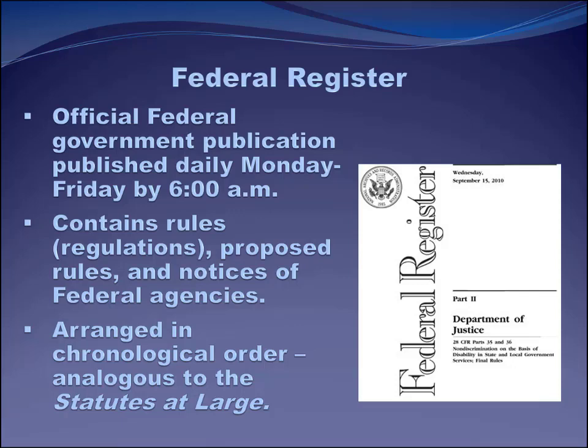In 1946, Congress passed the Administrative Procedure Act, which greatly expanded the federal administrative regime by requiring publication and the notice-and-comment rulemaking scheme. Agencies now preface final rules with a preamble summarizing the comments they received and their responses. These preambles are not reprinted in the Code of Federal Regulations, but they can be invaluable in explaining the scope and meaning of a regulation — like a legislative history for a regulation, similar to how a committee report helps determine legislative intent behind a statute.